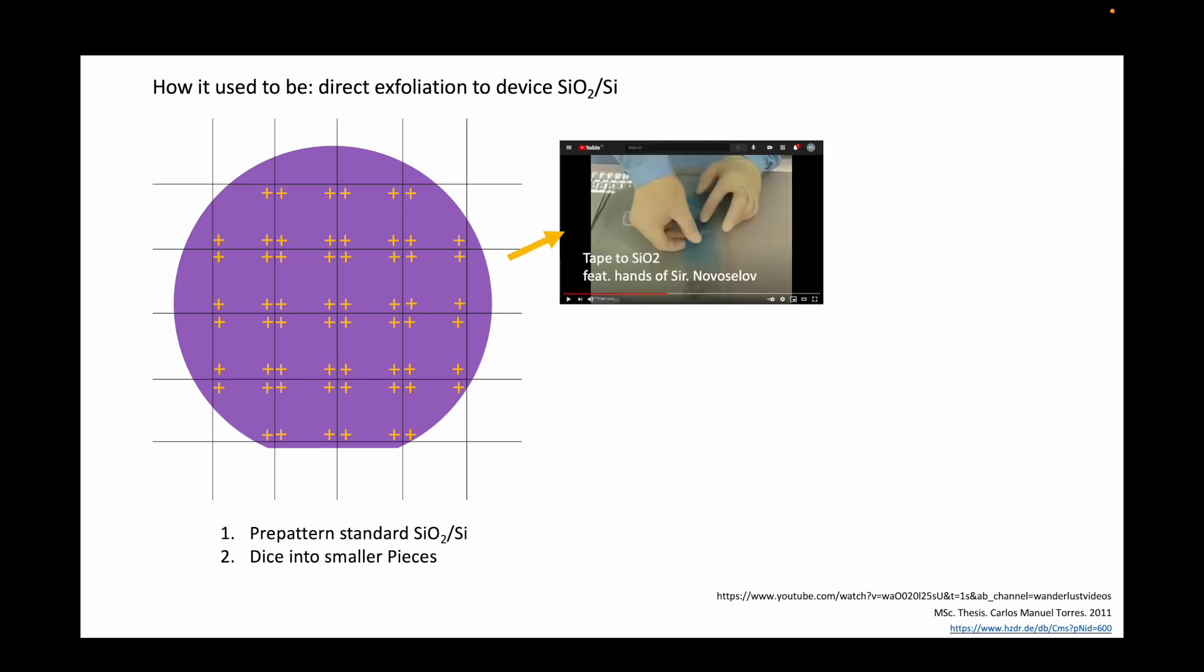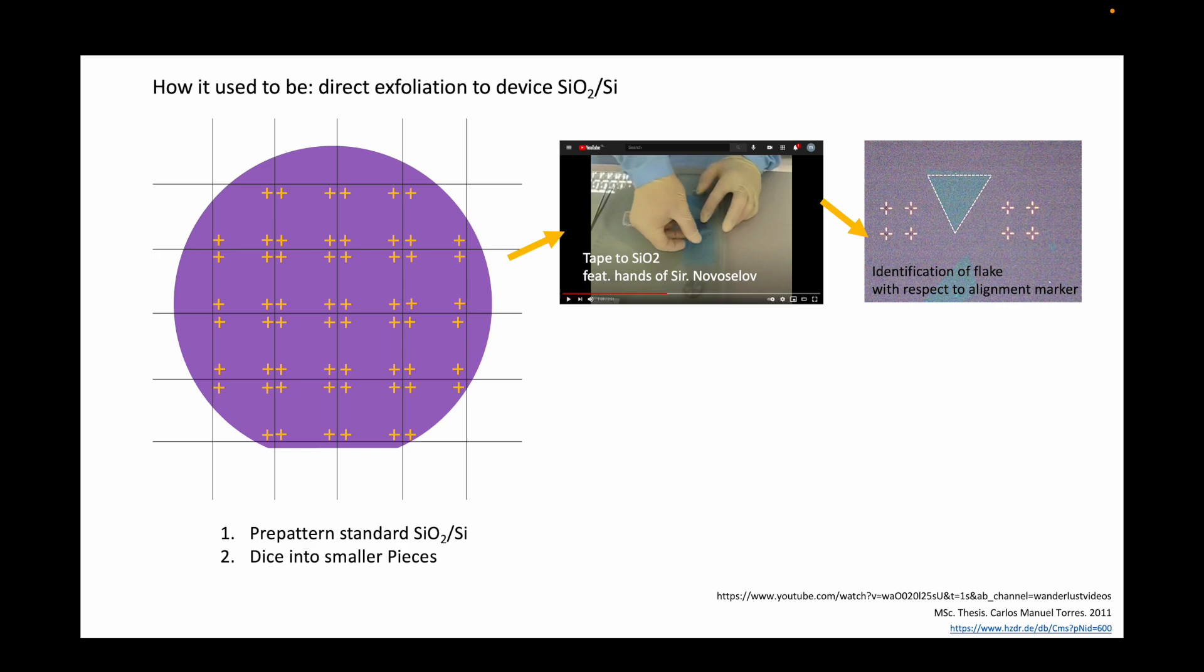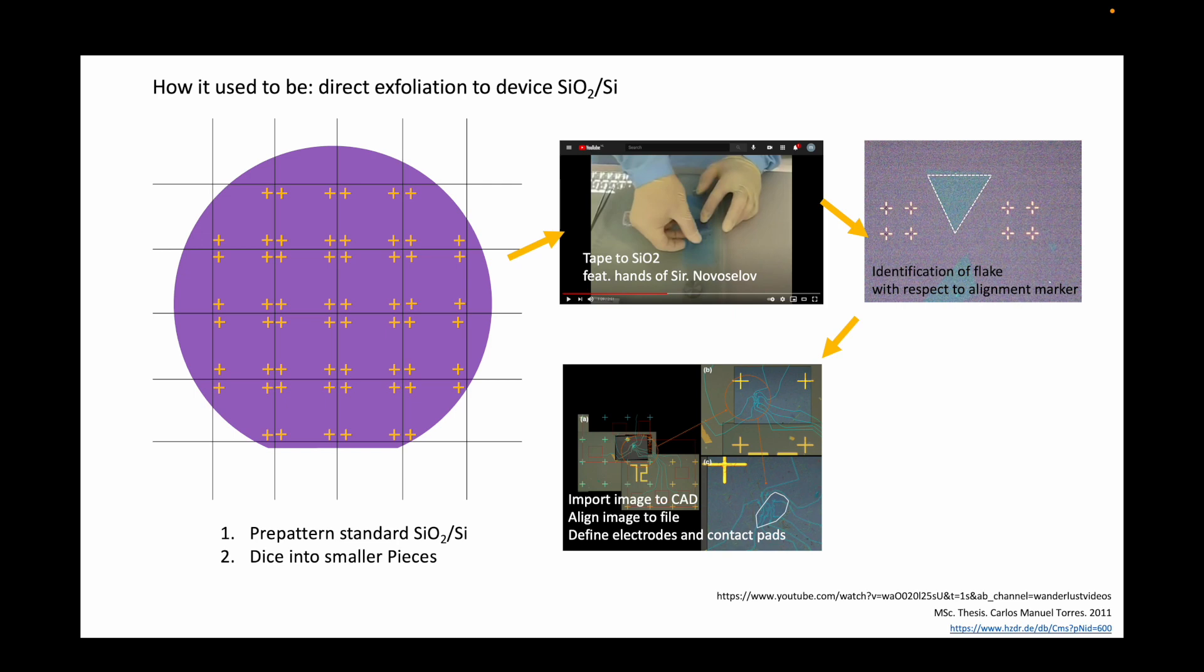Using optical microscopy, viable flakes were then identified and their positions with respect to the alignment markers recorded. Then the image was imported into a CAD or layout software with the alignment marks and the position of the flakes referenced with respect to the markers. Electrodes were drawn within the software. Then the design file was uploaded to the lithography tool, be it e-beam lithography or laser writer tool.